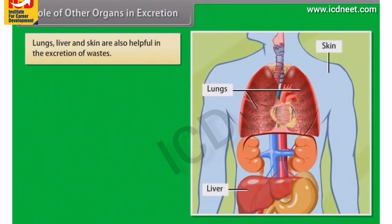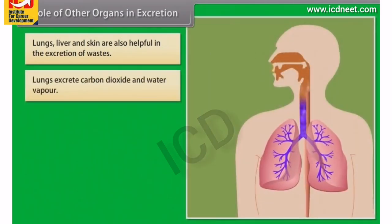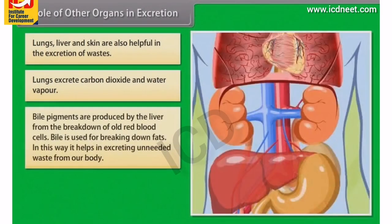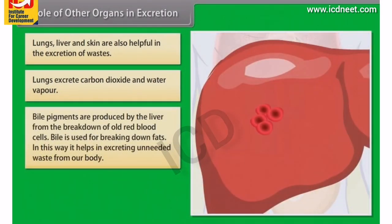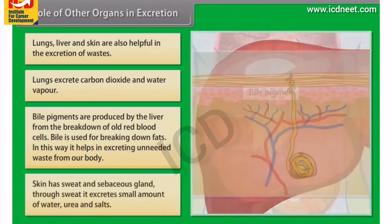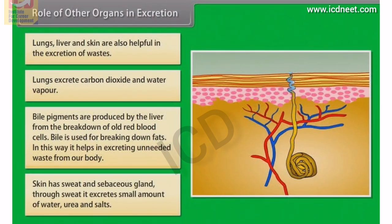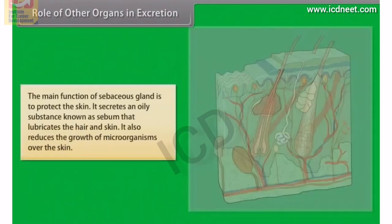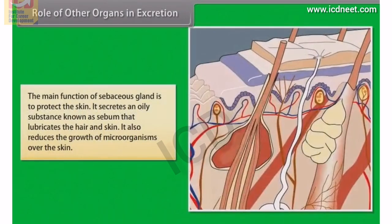Lungs, liver and skin are also helpful in the excretion of wastes. Lungs excrete carbon dioxide and water vapour. Bile pigments are produced by the liver from the breakdown of old red blood cells; bile is used for breaking down fats, helping to excrete unneeded waste. Skin has sweat glands and sebaceous glands; through sweat, it excretes small amounts of water, urea and salts. The main function of the sebaceous gland is to protect the skin by secreting an oily substance called sebum, which lubricates the hair and skin and reduces the growth of microorganisms on the skin.